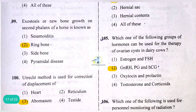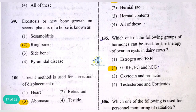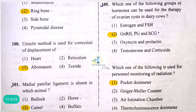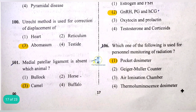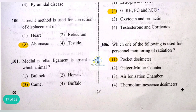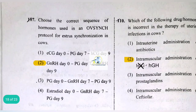The group of hormones that can be used for therapy of ovarian cysts in dairy cows includes GnRH, PGF2α, and hCG. The pocket dosimeter is used for personal monitoring of radiation.